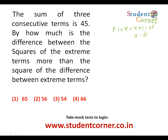The question asks: by how much is the difference between the squares of the extreme terms? Since x = 15, the number before is 14 and the number after is 16. So we need to find 16² - 14², the squares of the extreme terms.